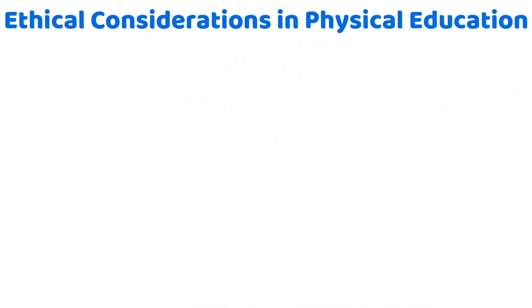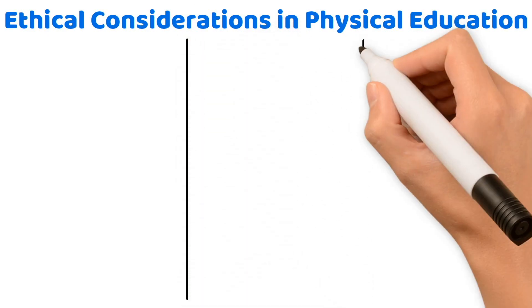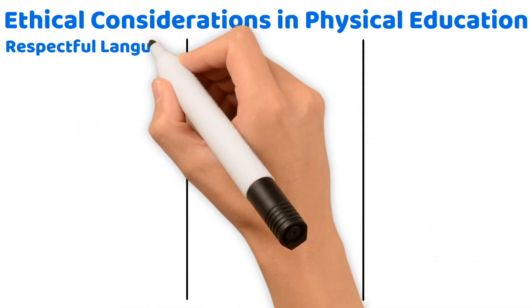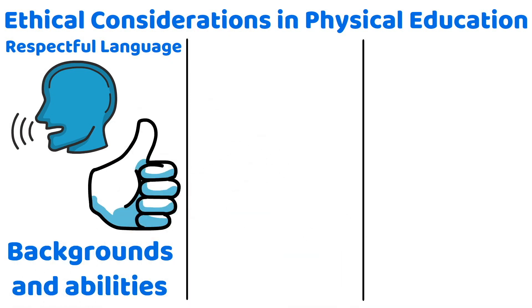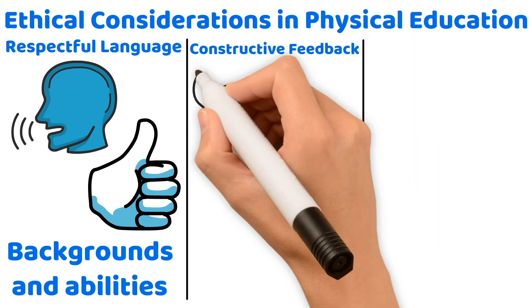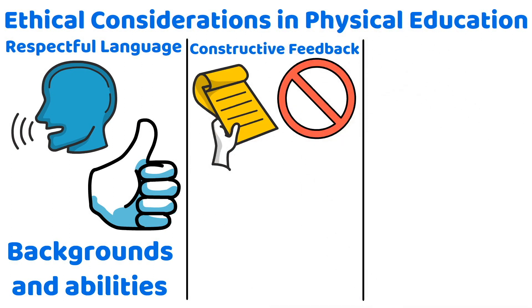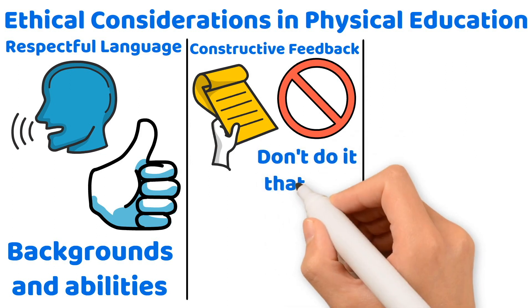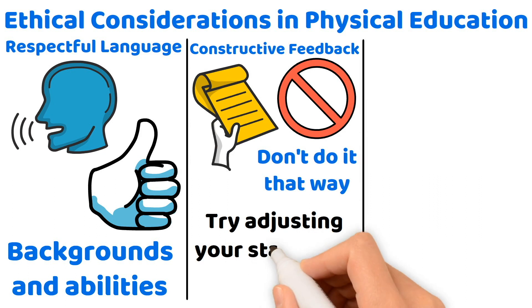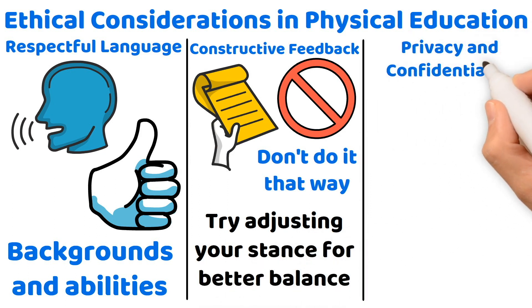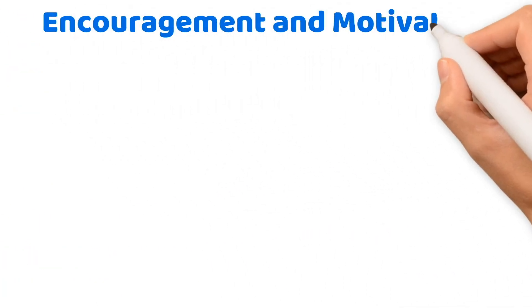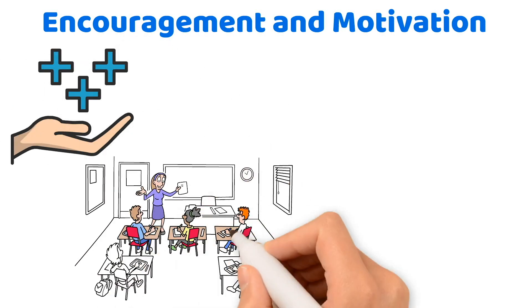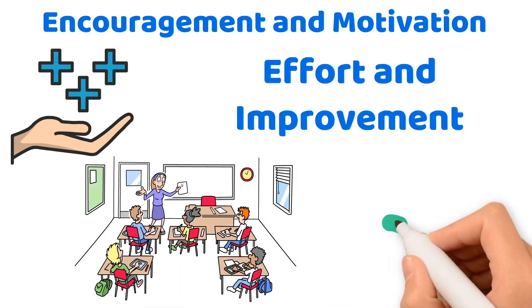Ethical considerations in physical education: ethical communication in PE is vital for fostering an environment of respect, inclusivity, and positive reinforcement. Always use inclusive language that respects all backgrounds and abilities, ensuring every student feels valued. Provide constructive feedback that helps improve skills without causing discouragement — for example, instead of saying 'don't do it that way,' say 'try adjusting your stance for better balance.' Discuss sensitive issues privately to maintain student dignity and trust, and use positive affirmations to inspire and engage students, focusing on effort and improvement rather than just natural ability.